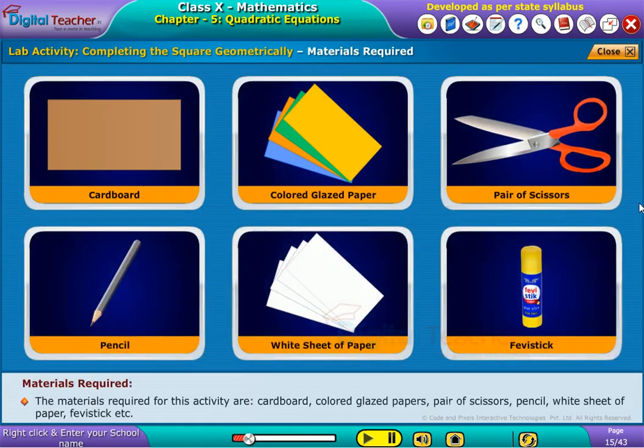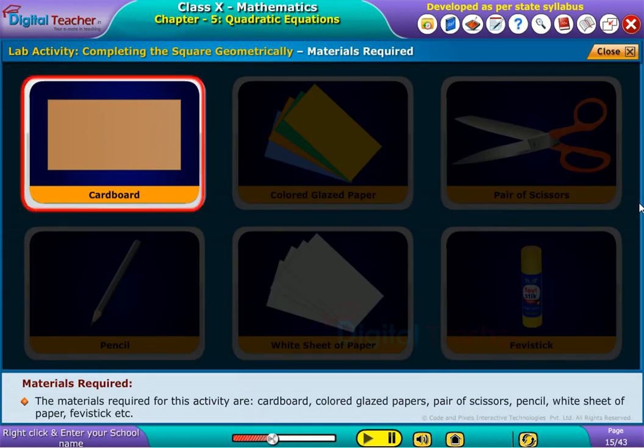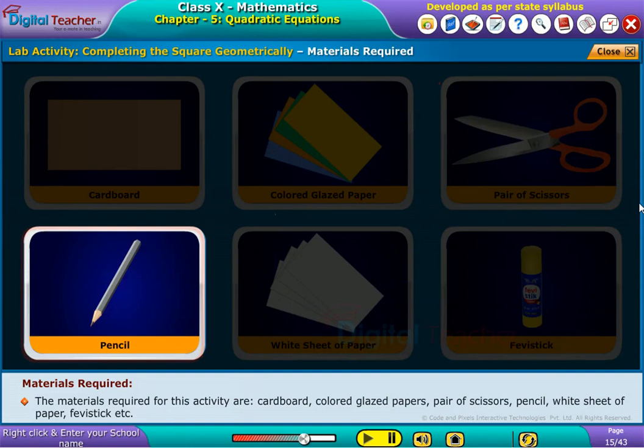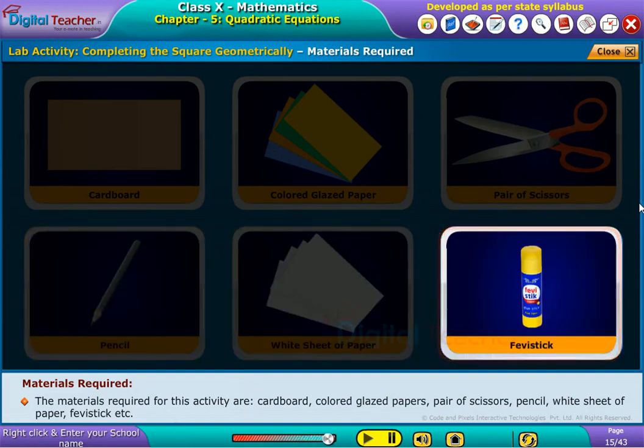The materials required for this activity are cardboard, colored glazed papers, pair of scissors, pencil, white sheet of paper, Favistic, etcetera.